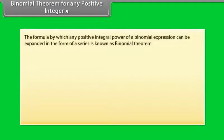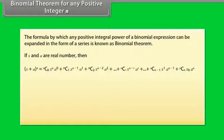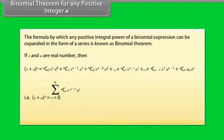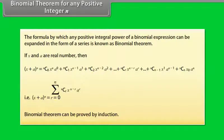Binomial theorem for any positive integer n. The formula by which any positive integral power of a binomial expression can be expanded in the form of a series is known as the binomial theorem. If x and a are real numbers, then x plus a raised to power n is equal to the summation from r equals 0 to n of nCr into x raised to power n minus r into a raised to power r. Binomial theorem can be proved by induction.